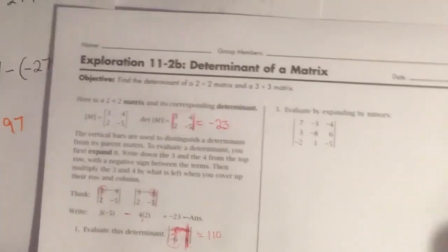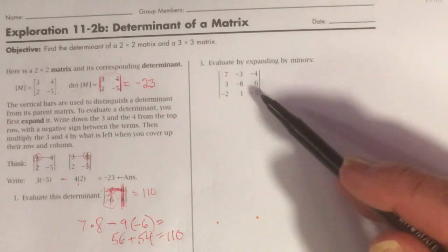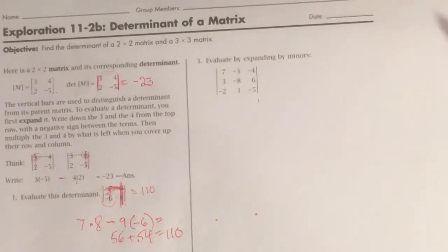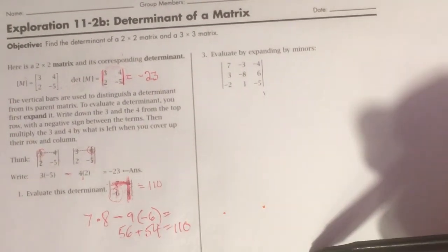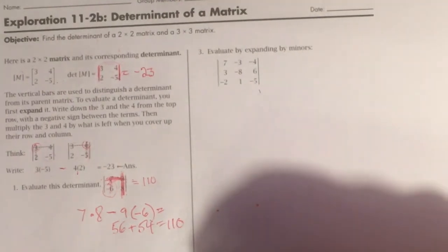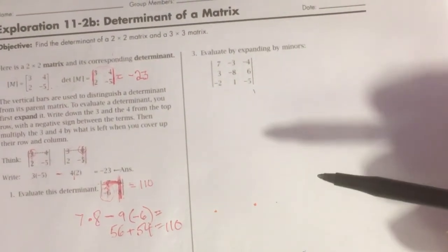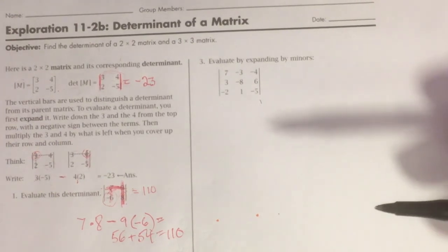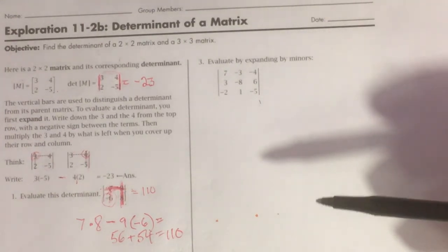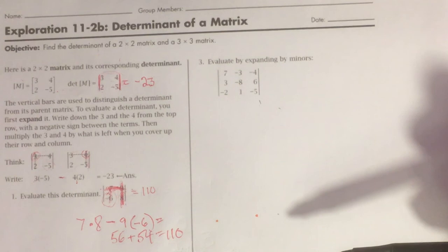So, what I'd like you to do is take a moment and do this one. And I don't really care whether you do it the way I just showed you, or whether you do it the way it says in the book, with expanding the minor determinants. It doesn't matter. Go ahead and do this and see what you get.